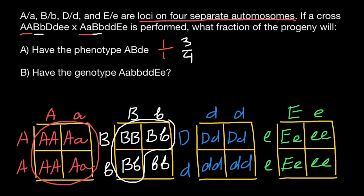For the allelic pair for gene D, parent one is heterozygous and parent two is homozygous recessive. We are looking for the recessive phenotype in the progeny. As you can see, the probability is going to be 50 percent, or one-half, for gene D.